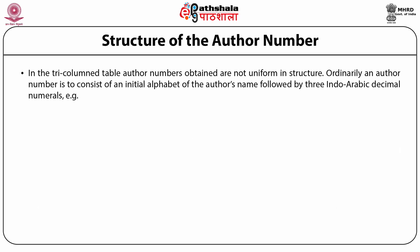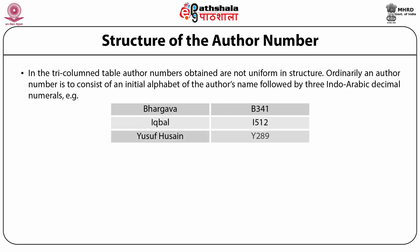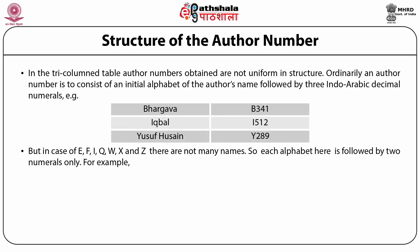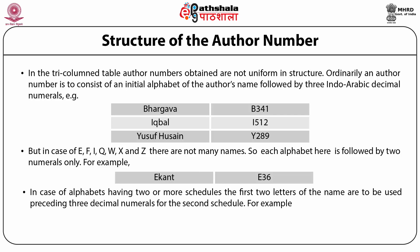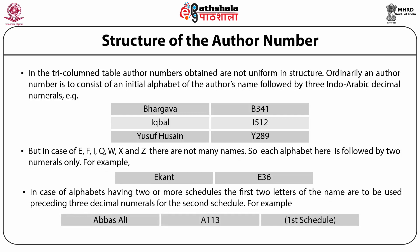In the tri-column table, author numbers obtained are not uniform in structure. Ordinarily, an author number consists of an initial alphabet of the author's name followed by three Indo-Arabic numerals in decimal notation. For example, Bhargwa B341, Iqbal I512, Yusuf Hussain Y289. But in case of E, F, I, Q, W, X, and Z, there are not many names, so each alphabet is followed by two numerals only. For example, Ekant gets the number E36. In case of alphabets having two or more schedules, the first two letters of the name are used preceding three decimal numbers for the second schedule. For example, in the first schedule Abbas Ali gets A1113, and in the second schedule Alag gets AL113.